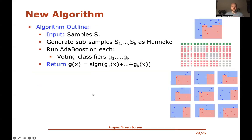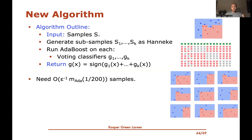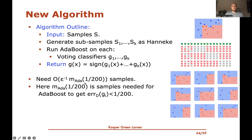Applying this to our algorithm: we generate subsamples as Hanneke does and run AdaBoost on each to produce voting classifiers, then return the majority. By the refined Hanneke analysis, the total samples needed is (1/ε) times the number of samples AdaBoost needs to achieve error 1/200. So we only need to understand how many samples AdaBoost needs for that constant error target.